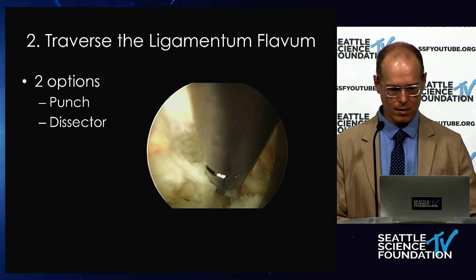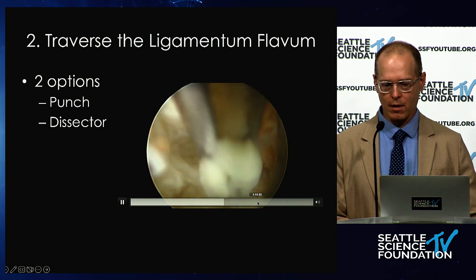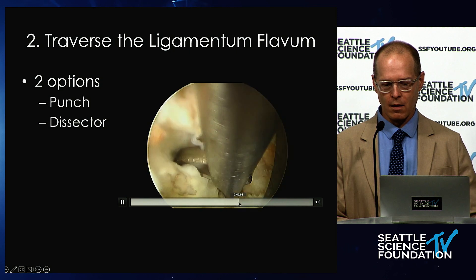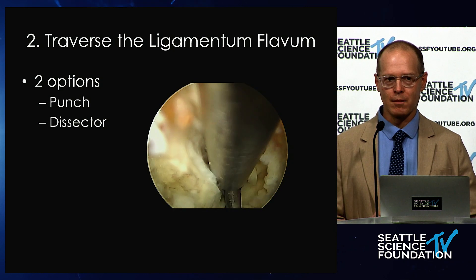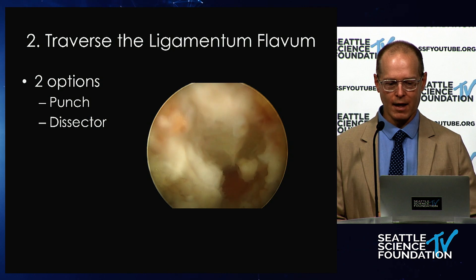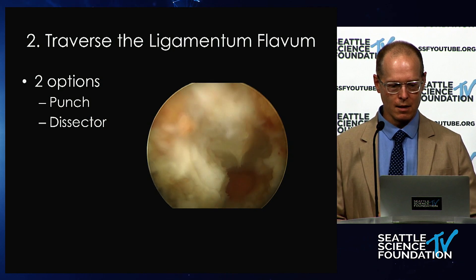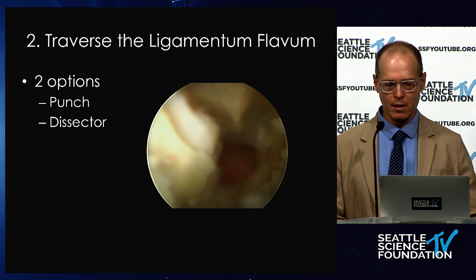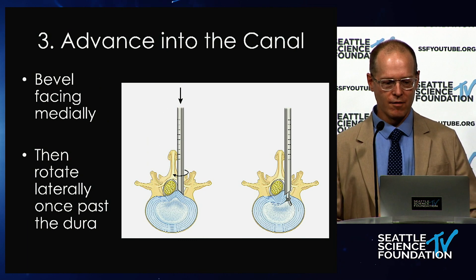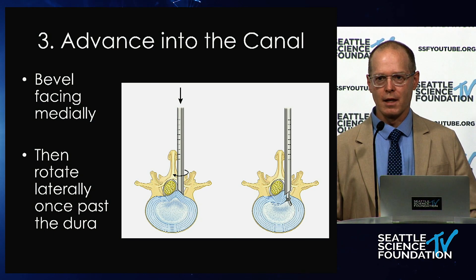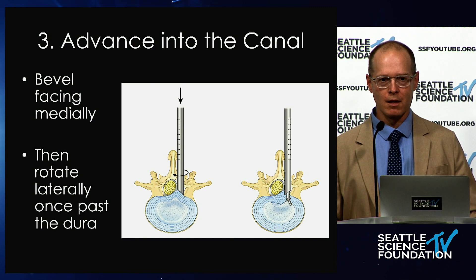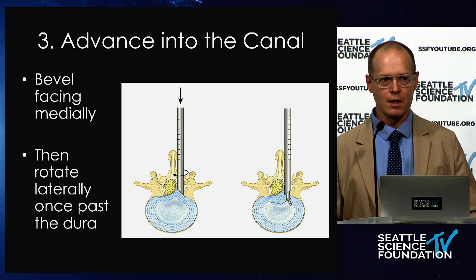As you get a little farther along, you will pass through the ligamentum and the irrigation will pass through at the same time, which pushes the dura down and away. So then you'll see epidural fat, and you can continue to open up the ligamentum and the aperture. From there you're going to advance into the canal. The bevel of the working port is facing medially so that it will give you a good view of the dura, and it will tend to push the dura and the nerve roots medially.